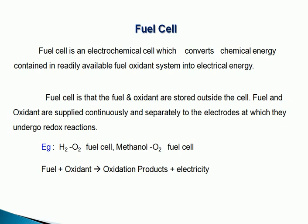In fuel cells, the fuel and oxidant are stored outside the cell. Fuel and oxidant are supplied continuously and separately into the electrodes, at which they undergo redox reactions. Examples include hydrogen oxygen fuel cell and methanol oxygen fuel cell. The fuel plus oxygen, while burning, produces oxidation products along with electricity. This is the concept of fuel cells.